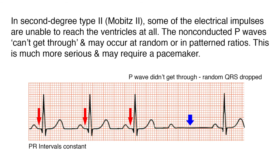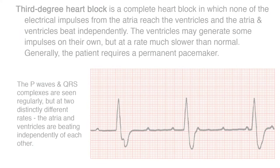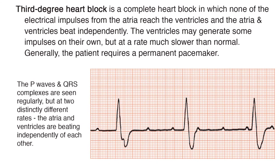In second degree type 2, or Mobitz 2, some of the electrical impulses are unable to reach the ventricles at all. The non-conducted P waves can't get through and may occur at random or in patterned ratios. This is much more serious and may require a pacemaker. Third degree heart block is a complete heart block in which none of the electrical impulses from the atria reach the ventricles, and the atria and ventricles beat independently. The ventricles may generate some impulses on their own, but at a rate much lower than normal. Generally, the patient requires a permanent pacemaker.